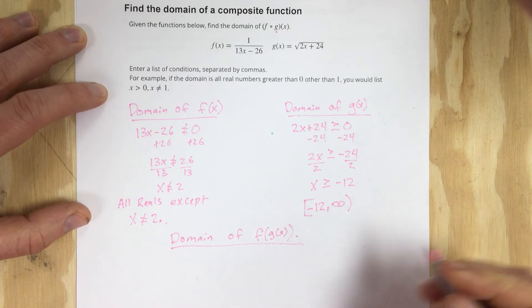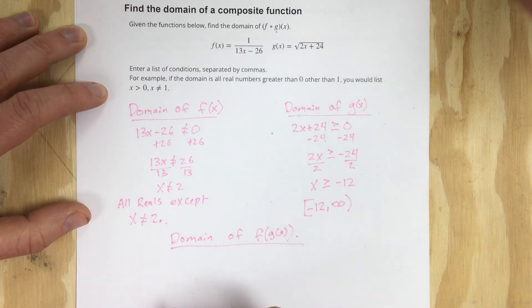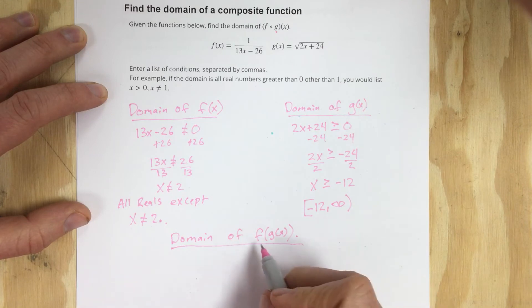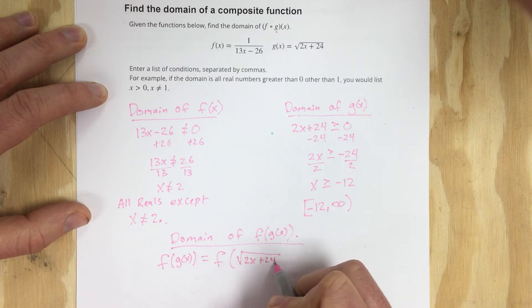So to find that, we're going to go ahead and plug that root 2x plus 24 into the f function. So we're going to say f of g of x is equal to f with an input of root 2x plus 24, which is equal to...